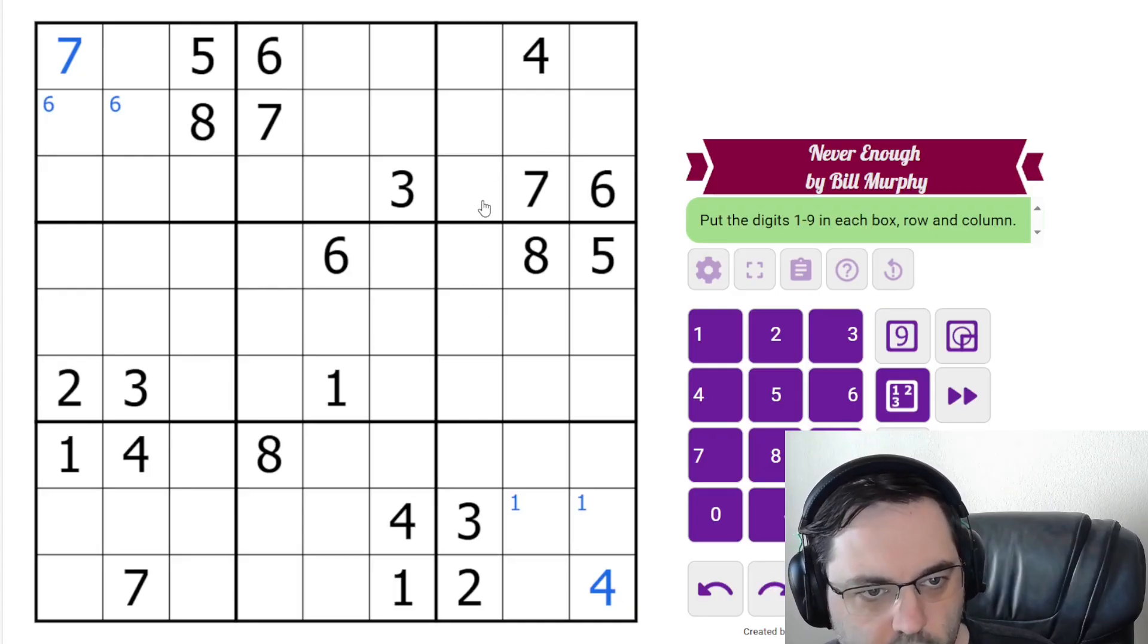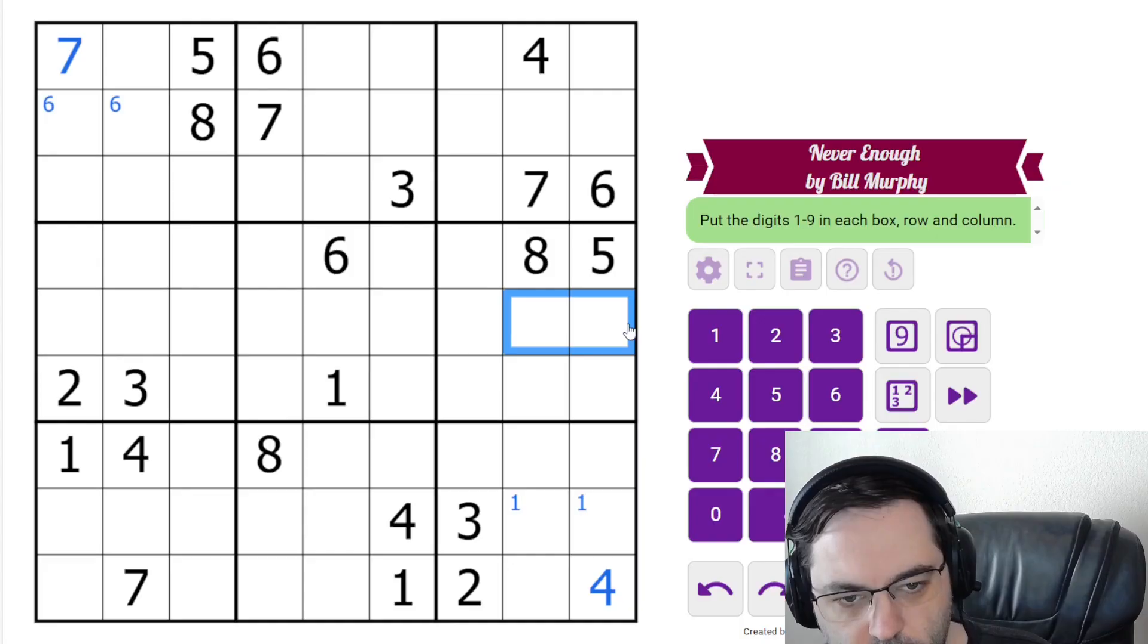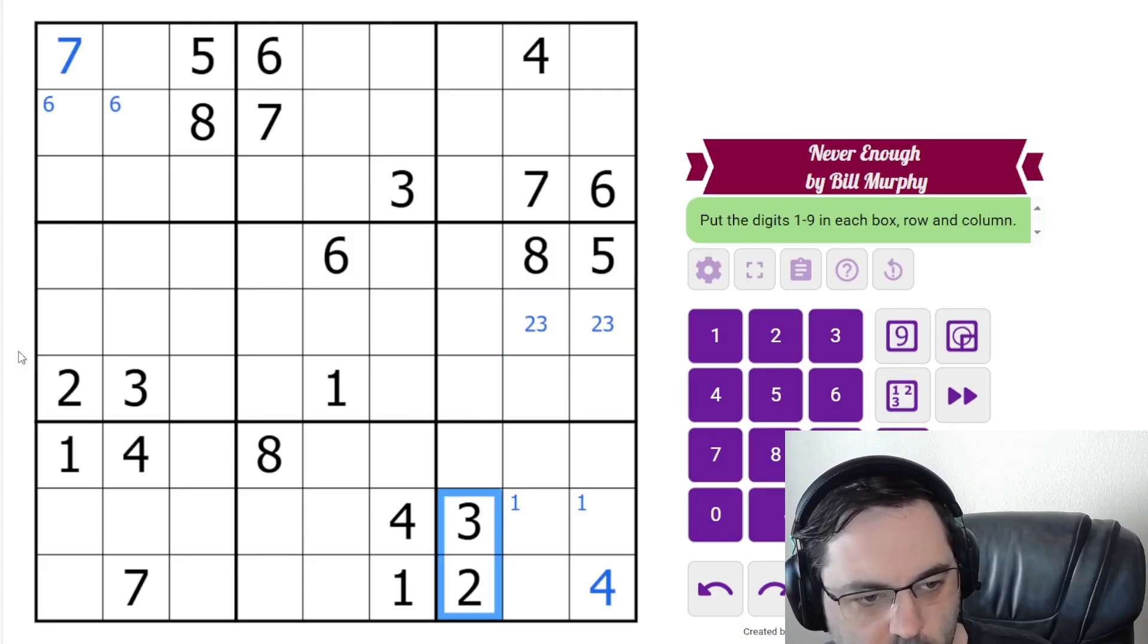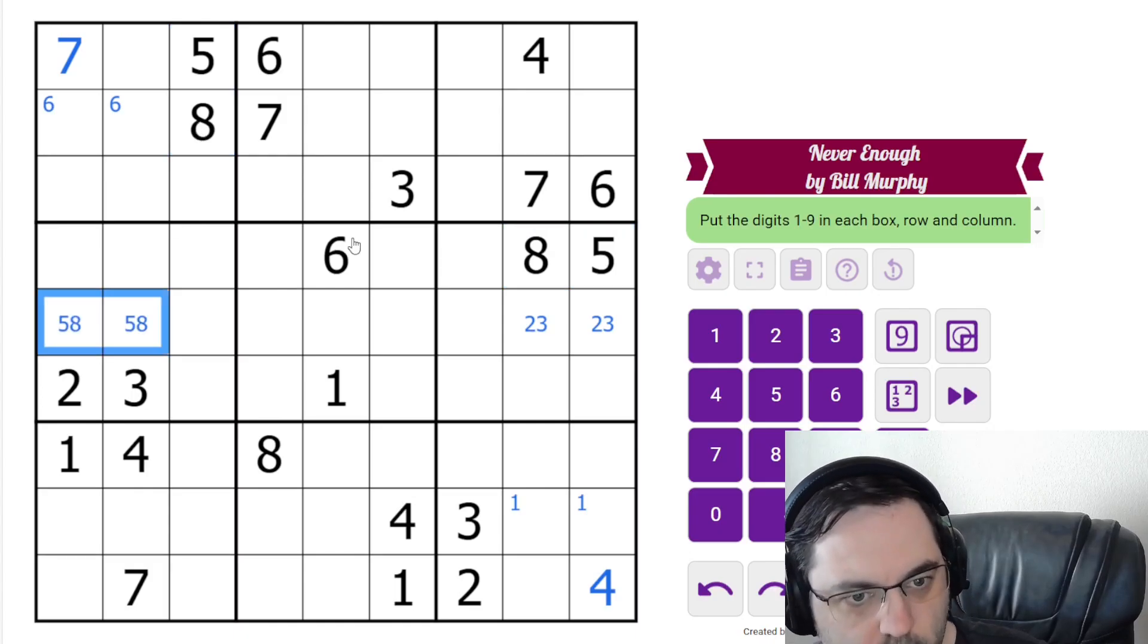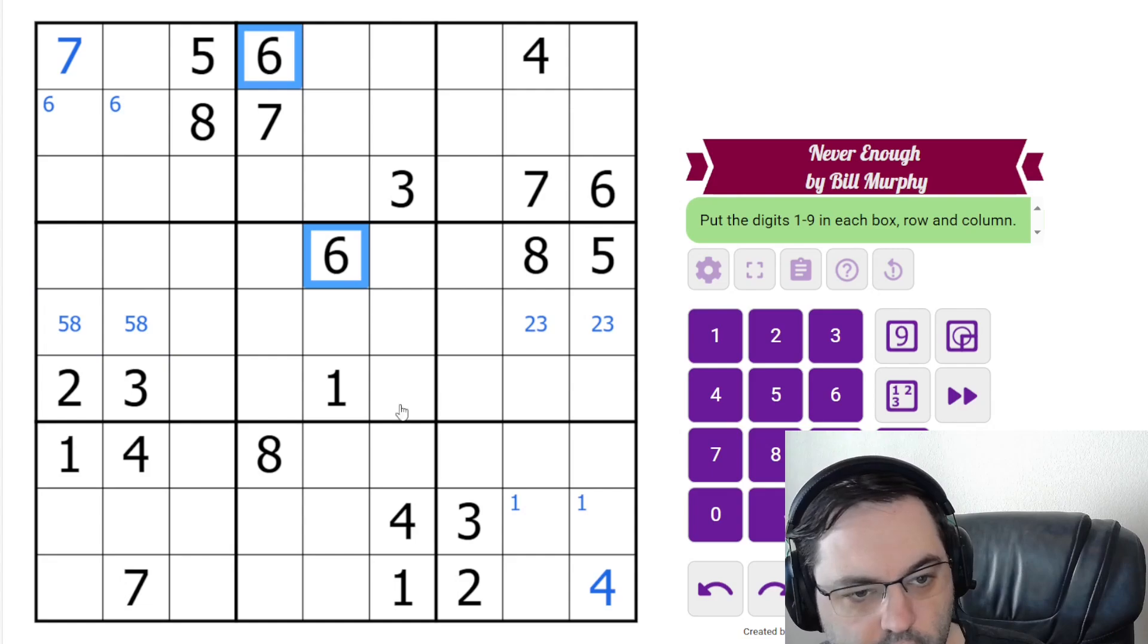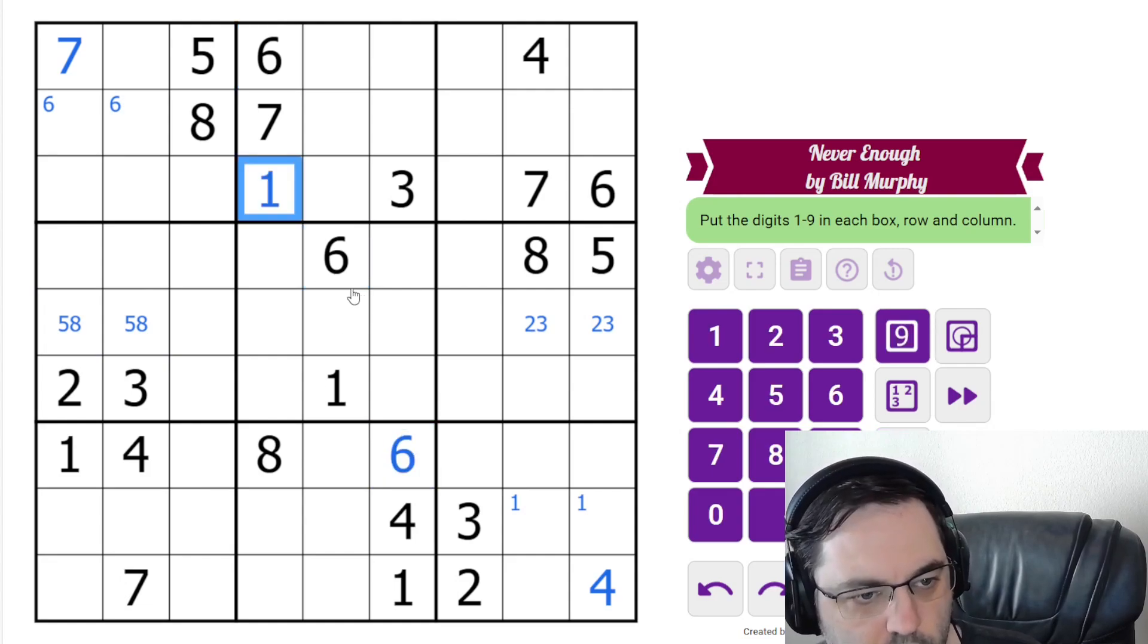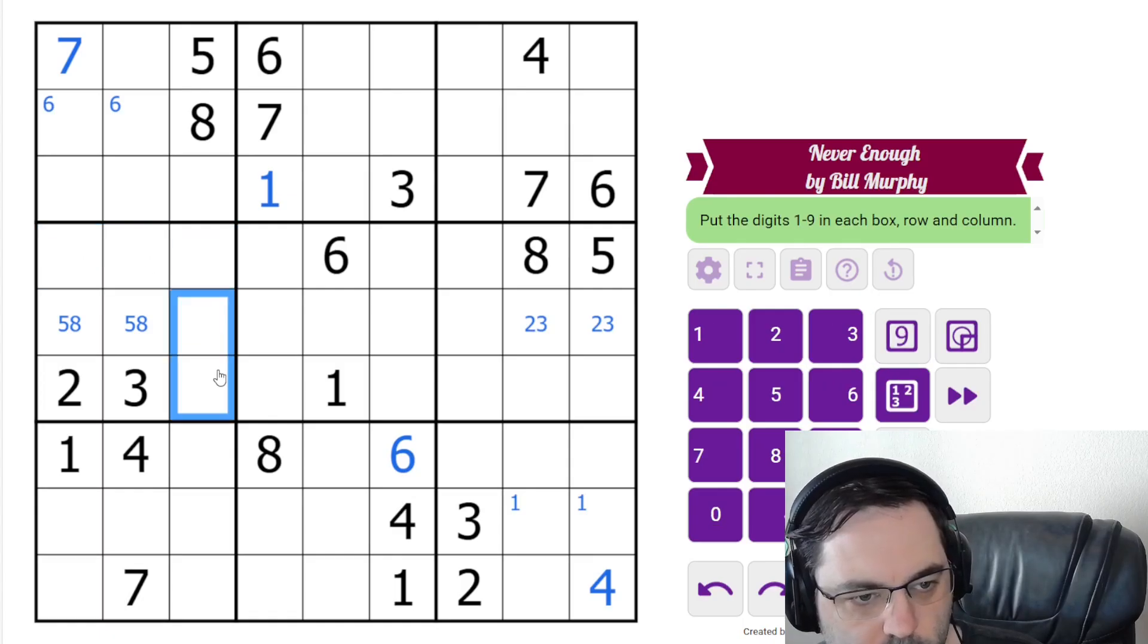All right. Where else do we need to look? I feel like I'm missing something obvious here. 2, 3 here. Give us a pair. It's a little less obvious, but this is what this is built around, it looks like. Oh, 6 is here, and 1 here. Those are just placed.